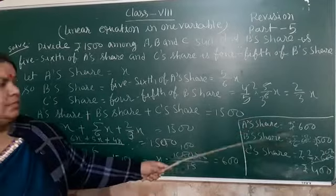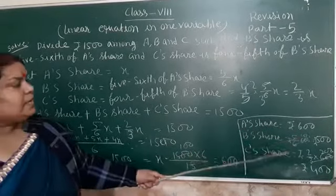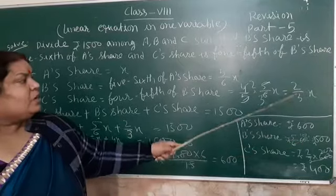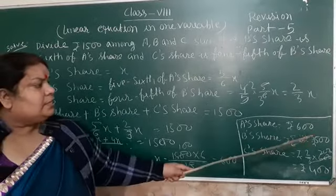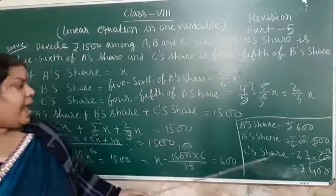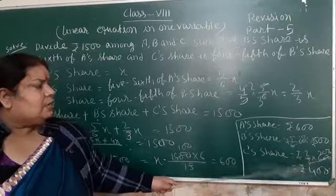Now, see, A's share is 600. B's share is 5/6 × 600 because X is here. So, 5/6 × 600 is equal to 500. And C's share is 2/3 X is equal to 400.